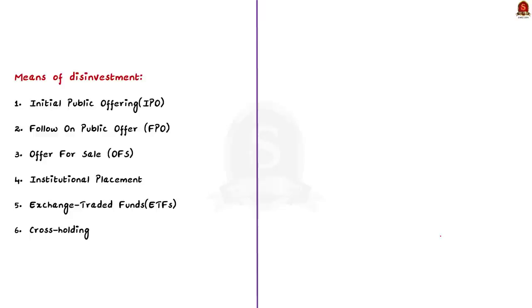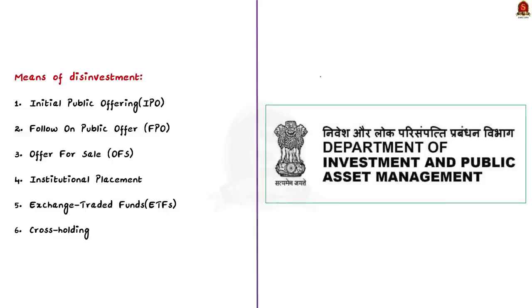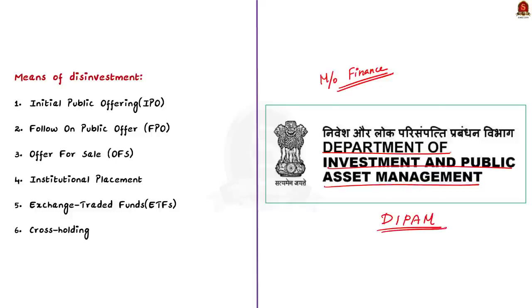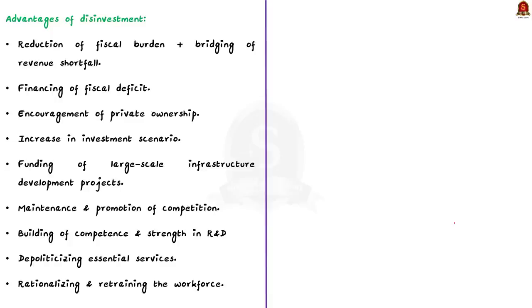The union finance ministry has a separate department for undertaking disinvestment-related procedures called the Department of Investment and Public Asset Management. The main reason for disinvestment is to reduce the fiscal burden of the government and to bridge the revenue shortfall. The government uses disinvestment proceeds to finance the fiscal deficit, to invest in the economy or social sector programs, or to retire government debt. Disinvestment also encourages private ownership of assets and trading in the open market.